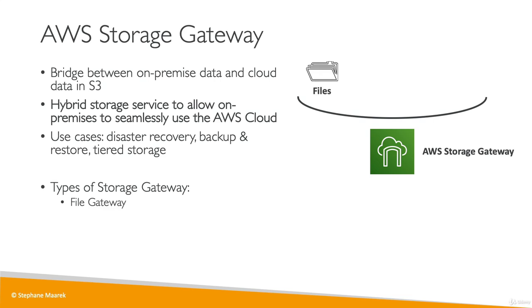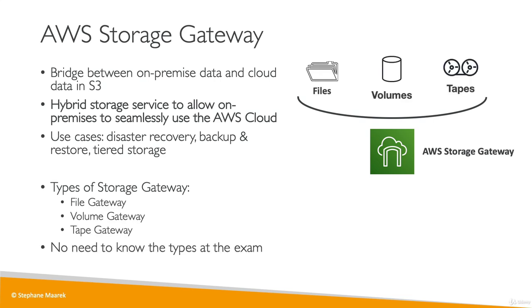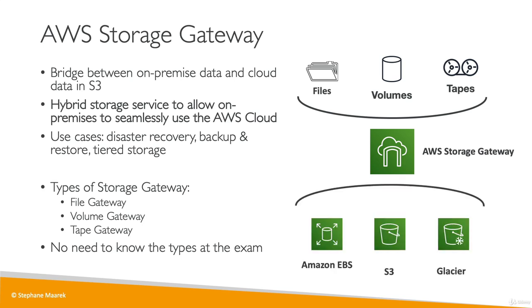There is a file gateway, a volume gateway, and a tape gateway. You don't need to know all these types going into the exam. What you need to know is that the storage gateway allows you to bridge whatever happens on-premises directly into the AWS cloud. Under the hood, the storage gateway uses Amazon EBS, Amazon S3, and Glacier behind the scenes. From a certified cloud practitioner perspective, the storage gateway is a way to bridge your file systems and storage on-premises into the cloud to leverage the best of both worlds.